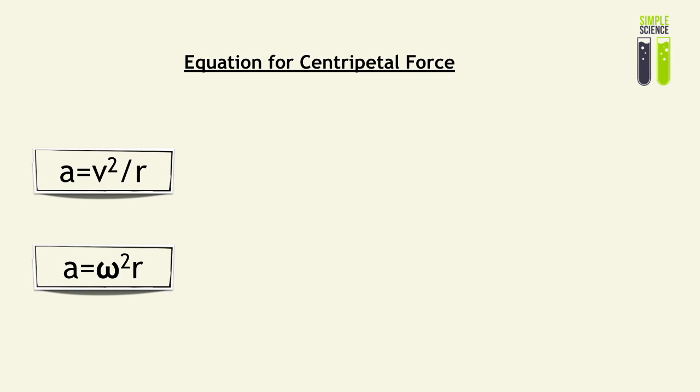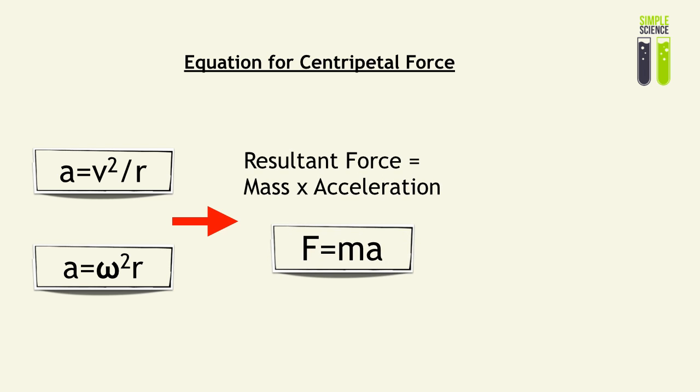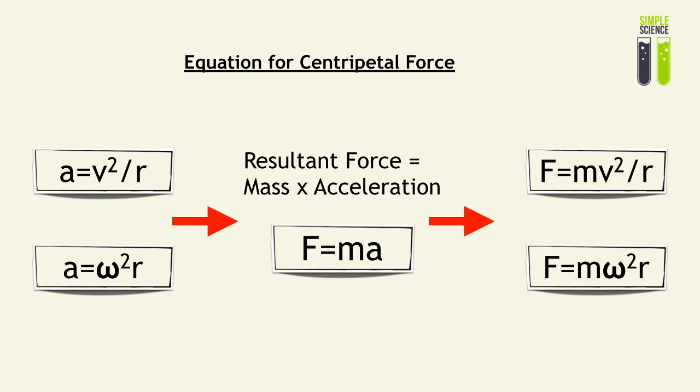In the previous video, we looked at some equations for centripetal accelerations and we knew how to derive them. These equations are a equals v squared over r and a equals omega squared r. We know that the resultant force is always equal to mass times acceleration, or F equals ma. Therefore, we can simply plug a into this F equals ma equation using Newton's second law to give us F equals mv squared over r and F equals m omega squared r. These are the two essential formulas for centripetal force.